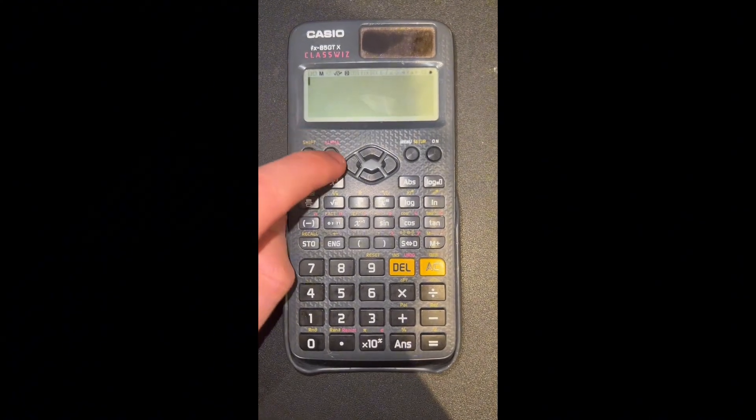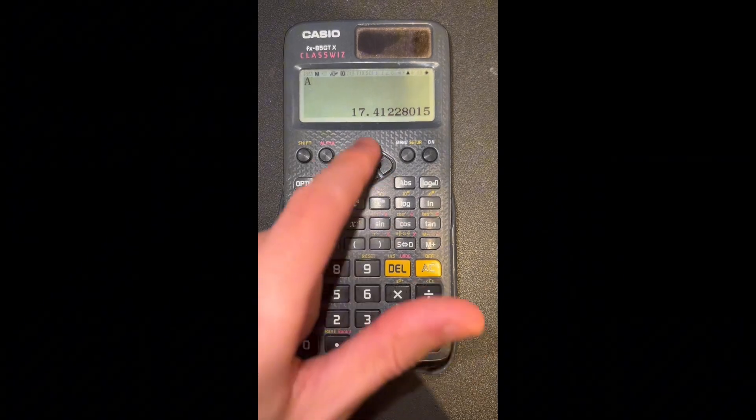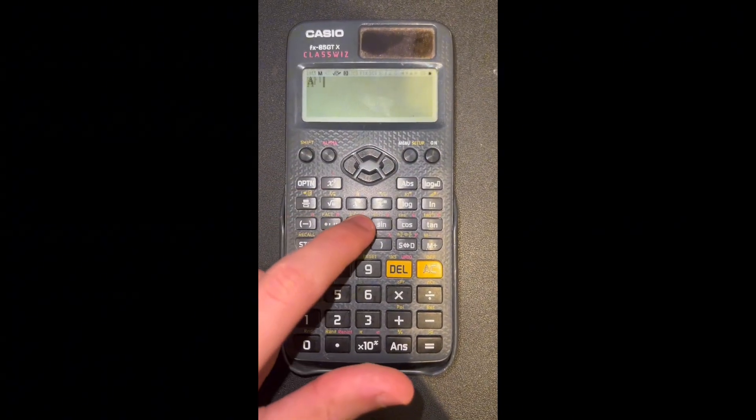Now, how do we bring back the letter A? Simple. Press alpha, then press the A button. As you can see, it's giving us back our number.